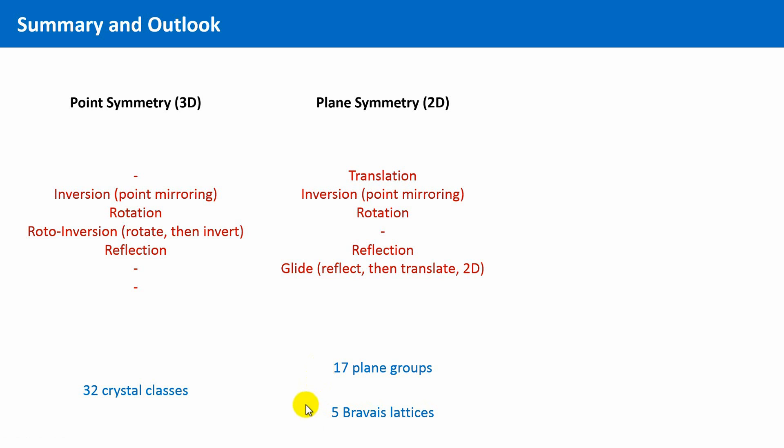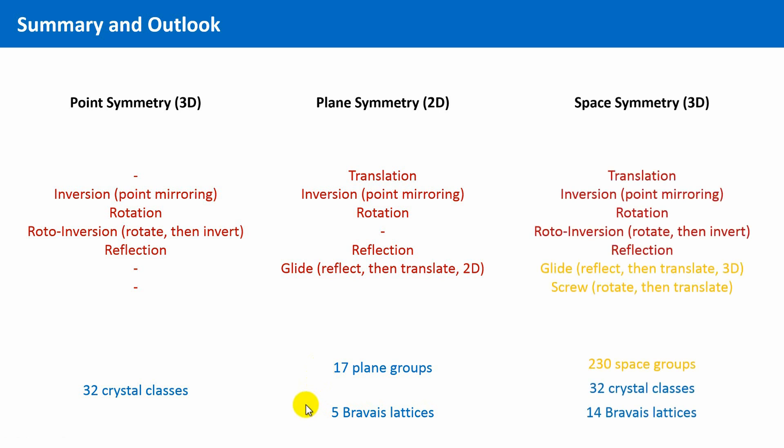In the next chapter, we will learn the missing things that will enable us to describe the complete symmetry of crystals, the 230 space groups. For this purpose,